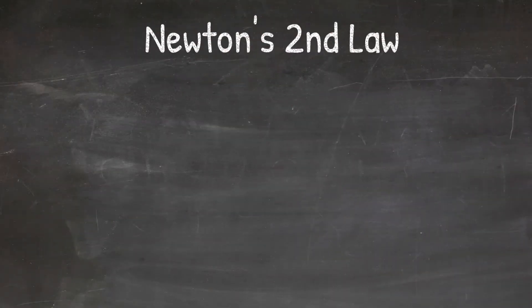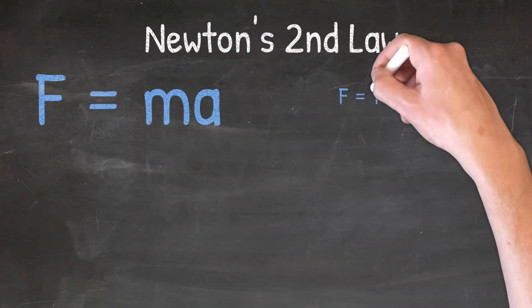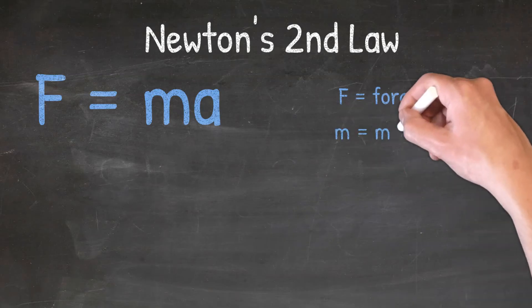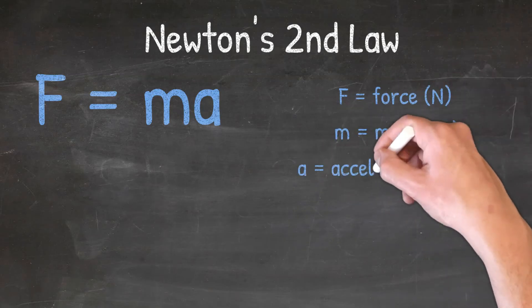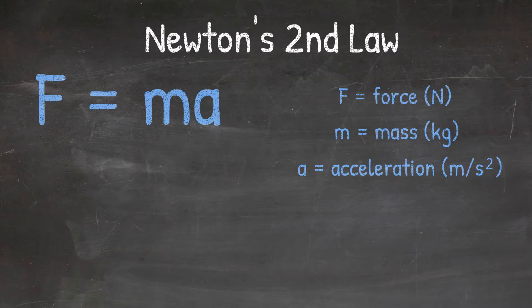Remember from our Newton's second law video, the formula that we use to solve Newton's second law is F equals MA, where F is force in Newtons, M is mass in kilograms, and A is the acceleration in meters per second squared.